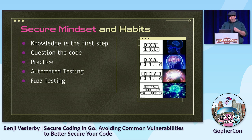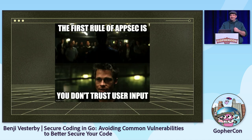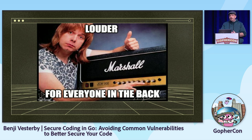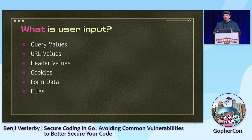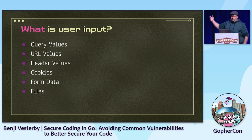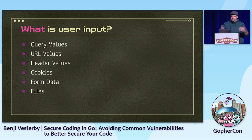The first and most important rule of application security is: you don't trust user input. And just for everybody in the back — you don't trust user input. So what is user input? Today we're going to be talking about primarily HTTP REST endpoints. For those, user input includes URL values, query values, headers, cookies, files — all that kind of stuff.